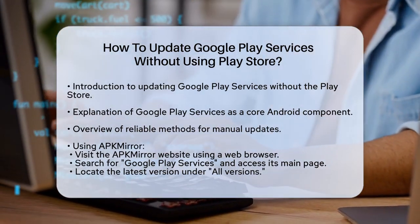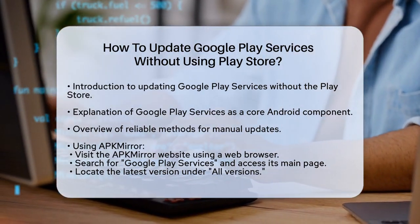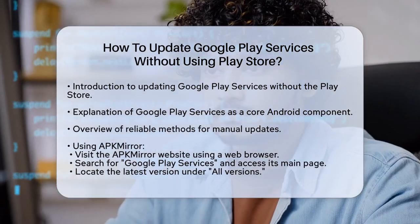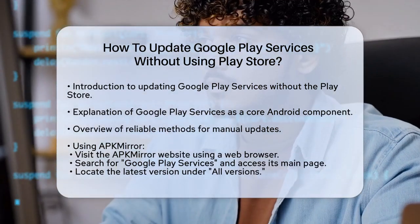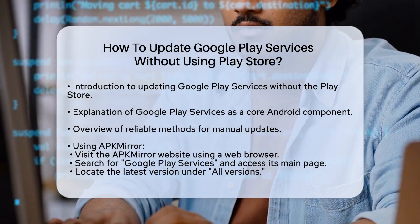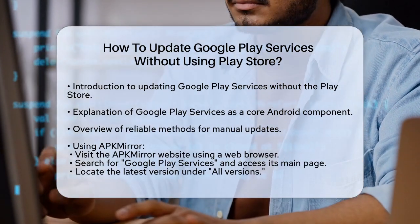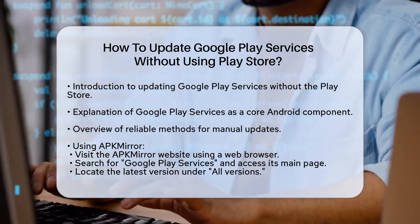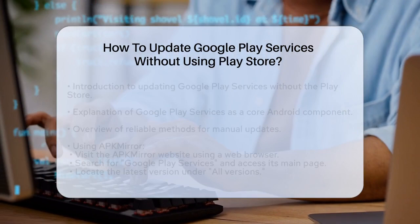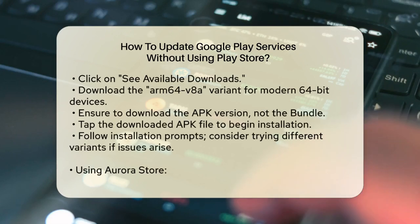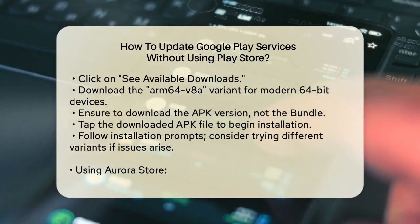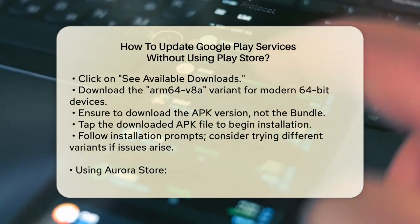Using APK Mirror — one of the most trusted ways to update Google Play Services is by using APK Mirror. Here's how you can do it. Open your web browser and go to the APK Mirror website. Search for Google Play Services and navigate to the main page. Look for the most recent listing under the All Versions section.